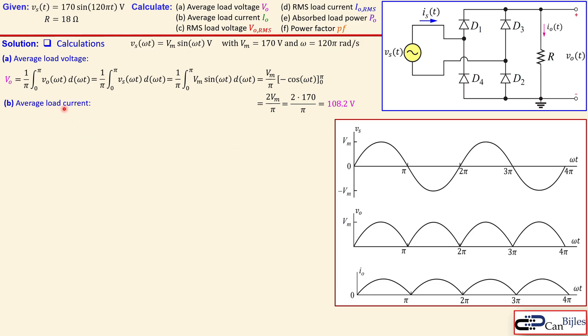The average load current is calculated using Ohm's law: the average load current equals the average load voltage divided by the resistance. With R = 18 Ω, this gives 6.013 A.